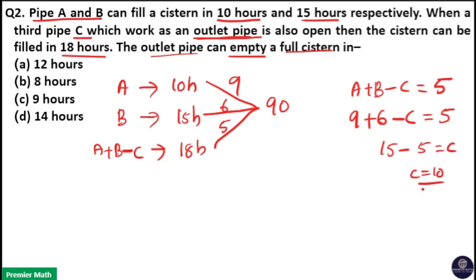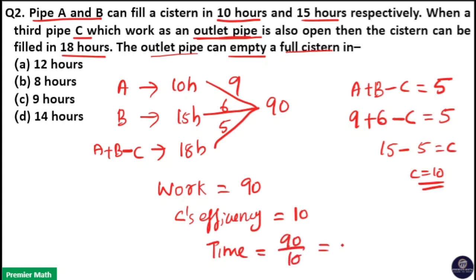If C's efficiency is 10 and full work is 90, then time taken by C to empty the full tank is 90 divided by 10, which equals 9 hours. So option C is your answer.